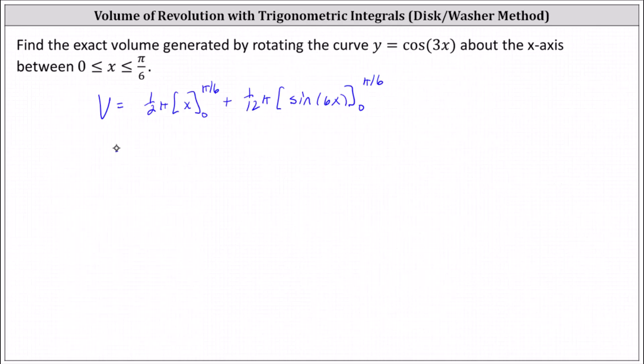And now for the first part, we have 1 half pi times the difference of pi divided by 6 and 0 plus 1 twelfth pi times the difference of sine 6 times pi divided by 6 and sine of 6 times 0.